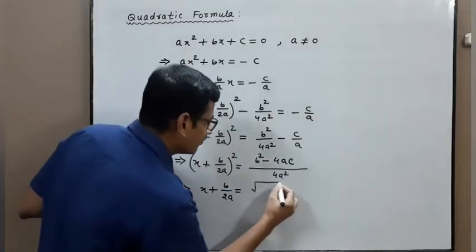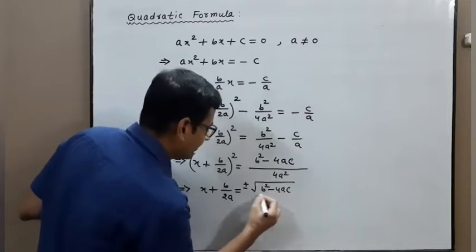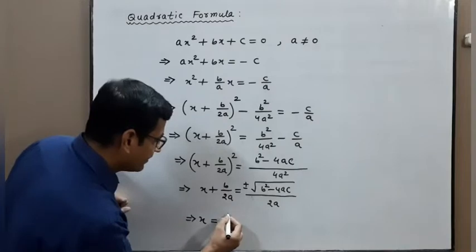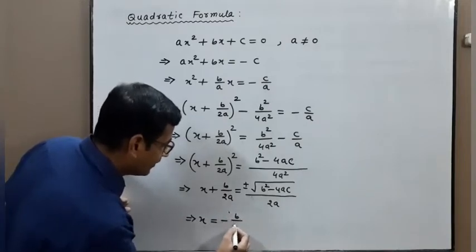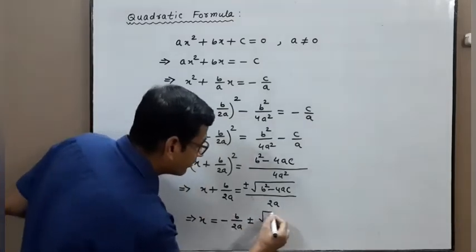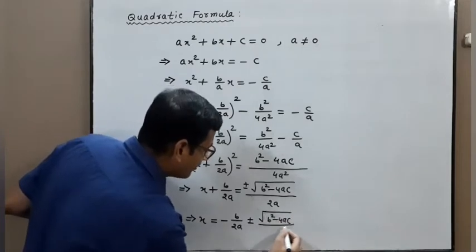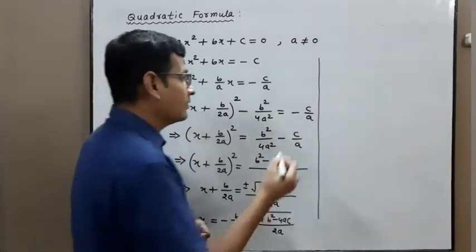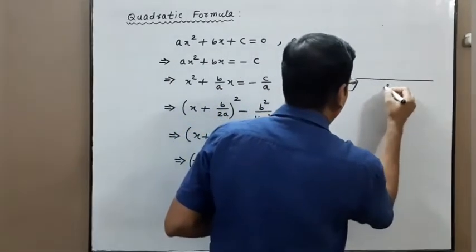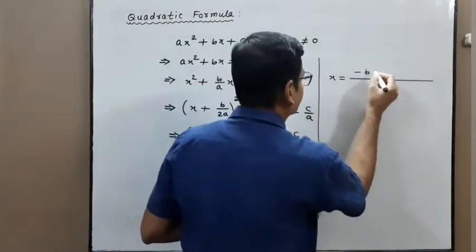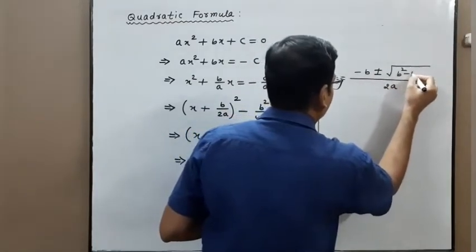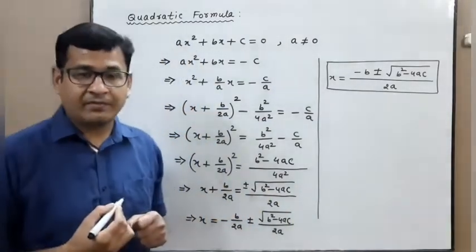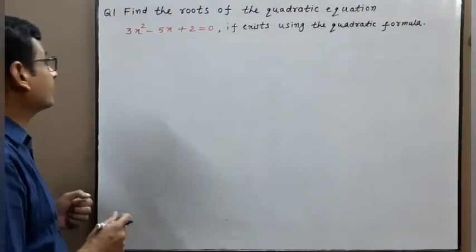Taking the square root of both sides gives us x plus b upon 2a equal to plus or minus root of b squared minus 4ac, upon 2a. Moving b upon 2a to the other side: x equals minus b upon 2a plus or minus root of b squared minus 4ac upon 2a. Taking LCM as 2a, we get x equal to minus b plus or minus root of b squared minus 4ac, all upon 2a. This is called the quadratic formula, or Shri Dharacharya formula.